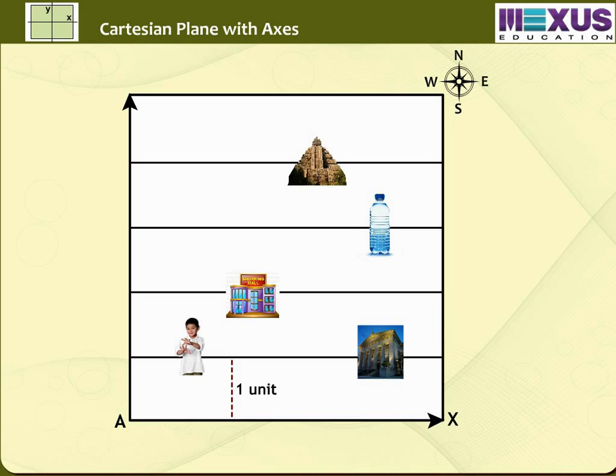Still we are not able to locate their position exactly. There is some confusion for us yet. In the same manner it is difficult for us to locate the exact positions of the mall, the bottle and the temple because they lie on different parallel lines.